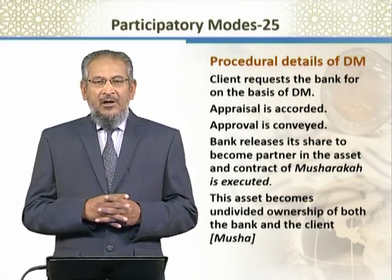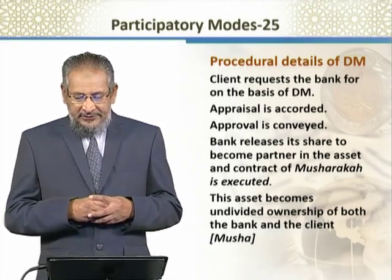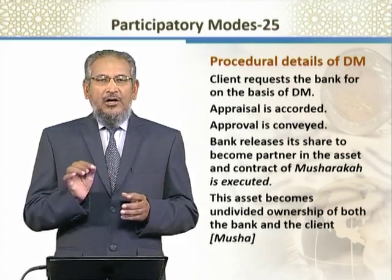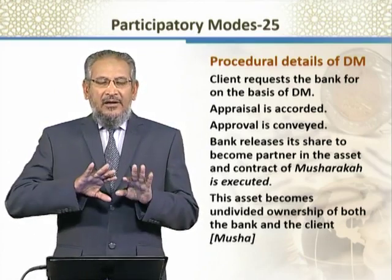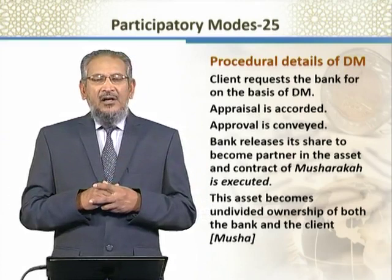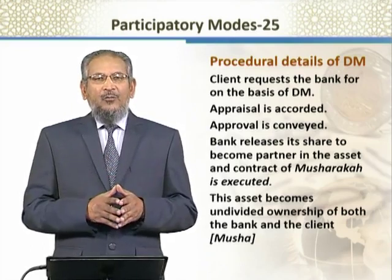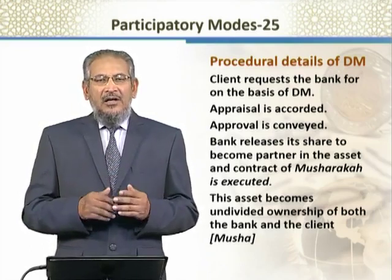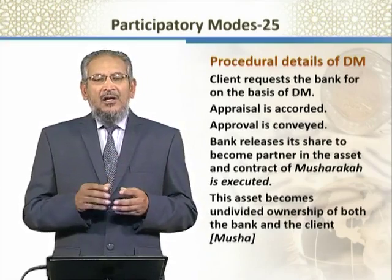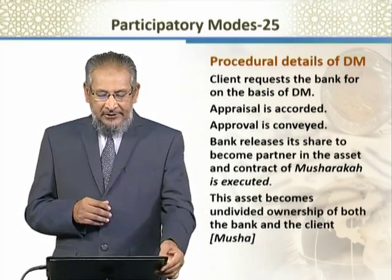Now the asset which is purchased through the joint ownership arrangement of bank and the client becomes common property or joint property of both the parties. اس حصے کو undivided partnership یا ownership کہتے ہیں جسے عربی اصطلاح میں مُشاع کہا جاتا ہے۔ یعنی ایسا نہیں کہ ہم یہ کہہ سکیں کہ یہ portion bank کا ہے اور یہ portion client کا ہے — بلکہ اس asset کی ہر چیز پر دونوں اپنی اپنی investment کے proportion سے مالک تصور کیے جاتے ہیں۔ مثلاً اگر bank نے 70% سرمایہ دیا اور client نے 30%، تو ہر چیز کے 70% پر bank کی اور 30% پر client کی ownership ہے۔